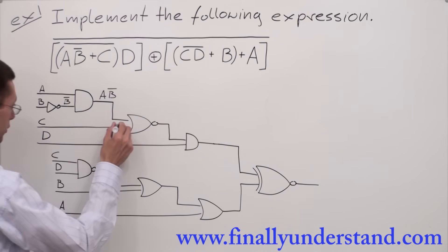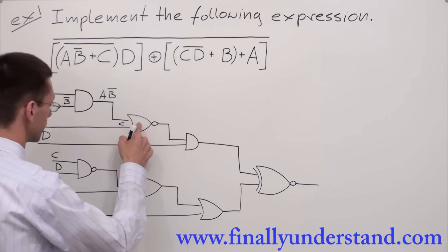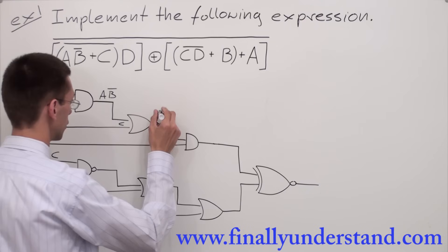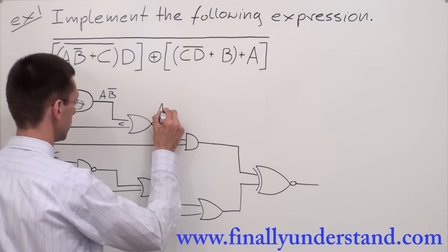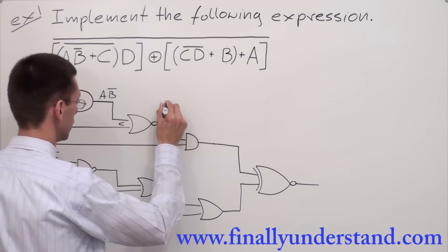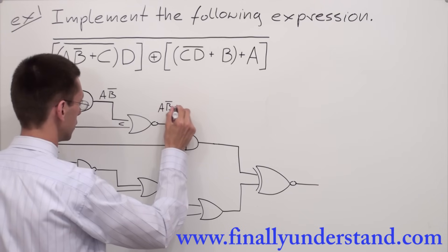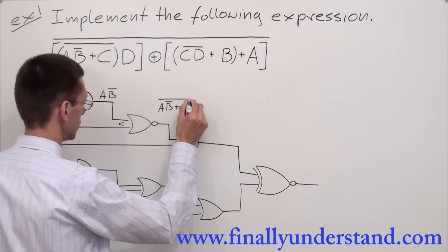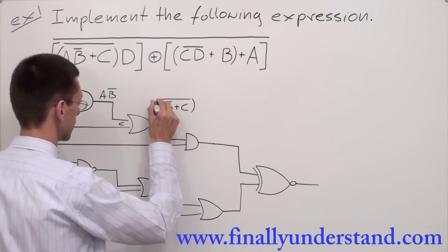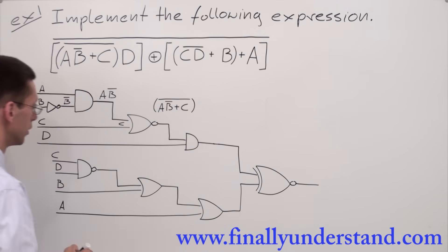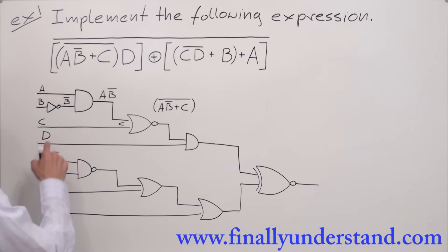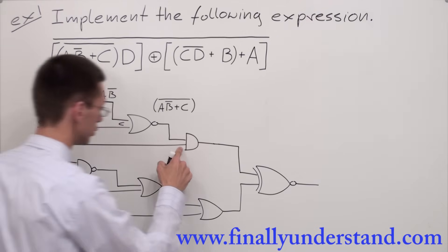A times B̄ will give me AB̄. C will go to the second input of my NOR gate. On the output of the NOR gate I'm going to have AB̄ NOR C. I can put this inside of the parenthesis.